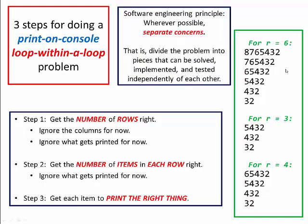This is an example of a critical principle that shows up all over the place in software engineering. The principle is to separate concerns — that is, divide the problem into separate pieces that can be solved, implemented, and tested independently of each other. Without that, software engineering would be much harder.